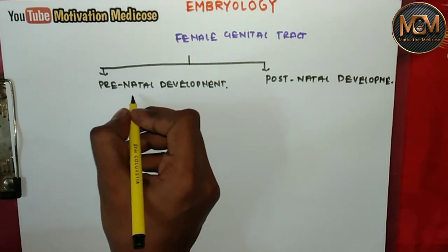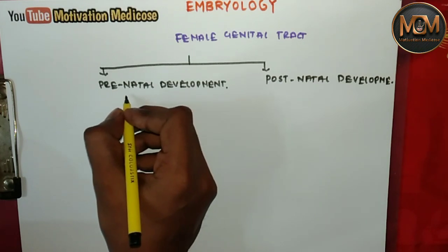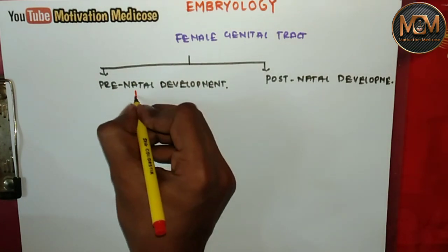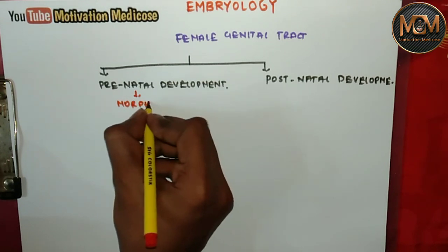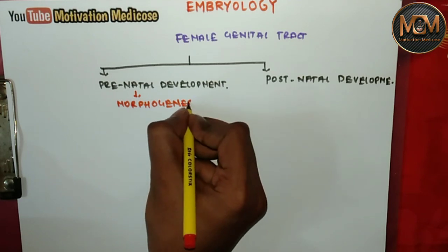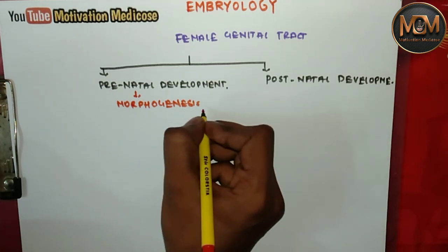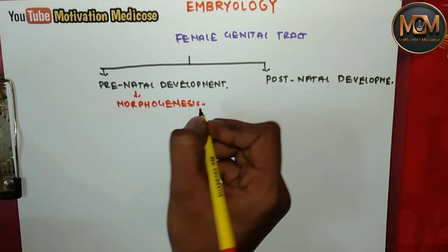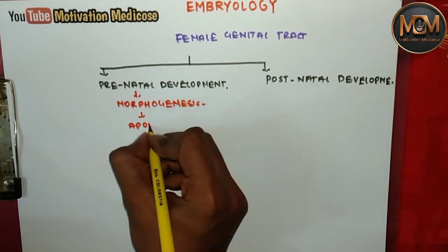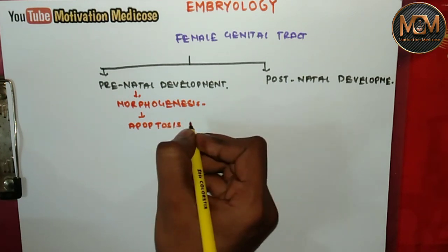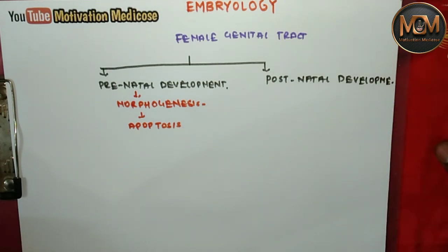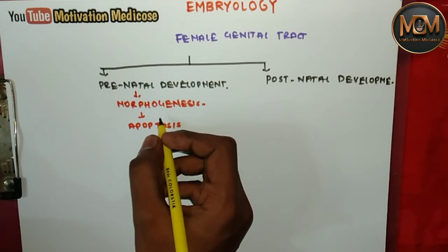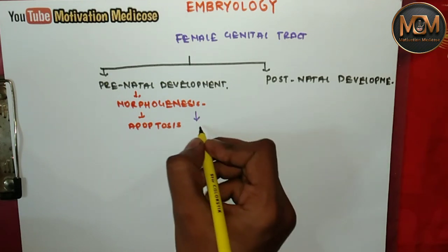This prenatal development is very important — it's the point where human beings are originated. In prenatal development, we have a process called morphogenesis. During morphogenesis, we have cell differentiation, cell division, transformation, migration, and even programmed cell death, which is also called apoptosis. Morphogenesis is very important because factors that affect normal development can cause congenital anomalies.